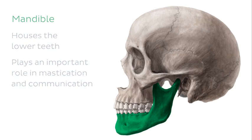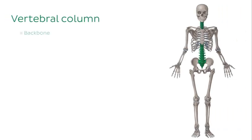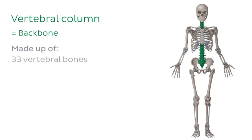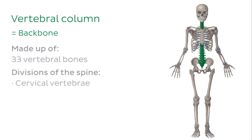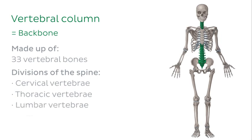Now that we've seen some of the bones of the skull, let's move on to have a look at the bones of the trunk, starting with the vertebral column. The vertebral column or backbone is made up of 33 vertebral bones known as vertebrae that are connected to each other through numerous joints. It can be subdivided into the cervical vertebrae, the thoracic vertebrae, the lumbar vertebrae, the sacrum and the coccyx.